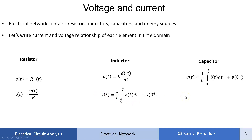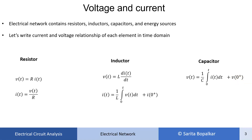Similarly, for the capacitor, V(t) is equal to 1 upon C, integration 0 to t of I(t) dt, plus V(0+), where V(0+) is the initial voltage developed across the capacitor. So before switching, if some constant voltage is present across the capacitor, after switching we need to consider this initial voltage also. Current through the capacitor is C·d/dt of V(t).